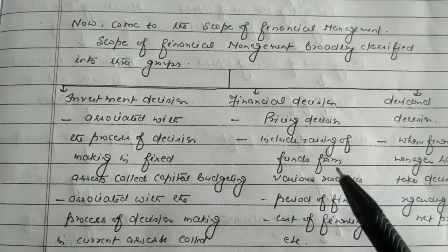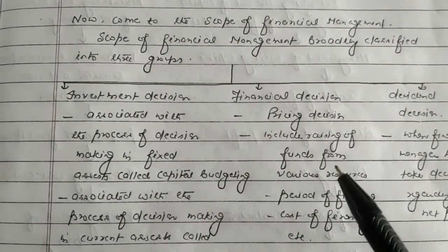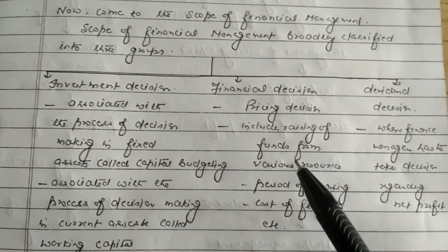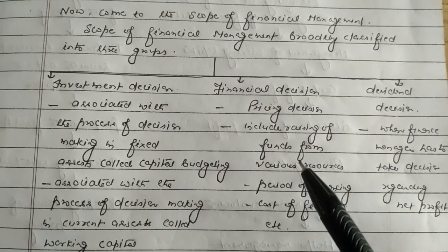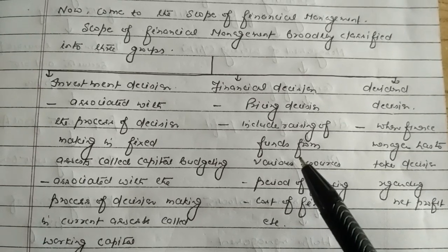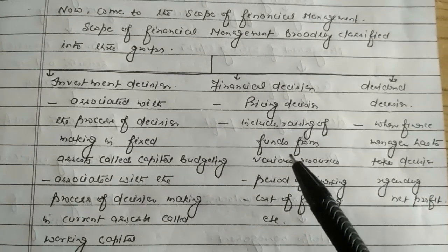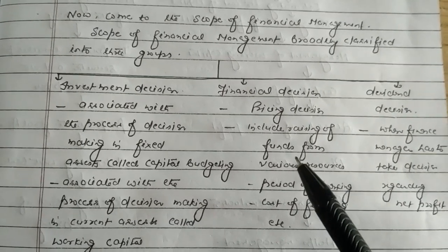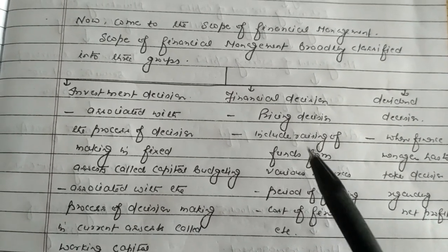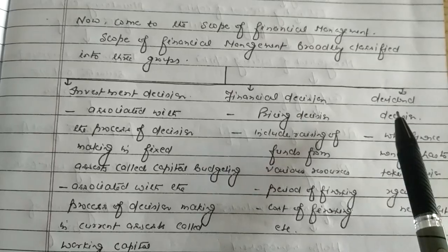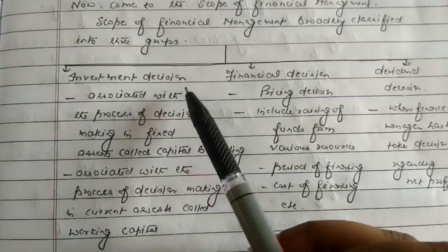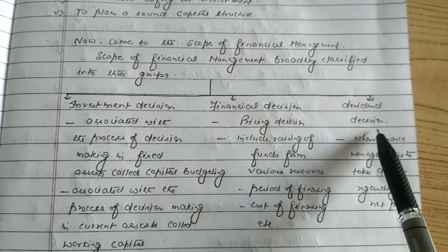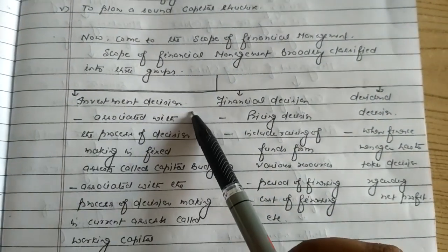Now come to the scope of financial management. In the modern era, the scope of financial management is broadly divided into three groups. There are three functions associated with financial management: investment decision, financial decision, and dividend decision. Their scopes are also classified in these three decision-making processes.